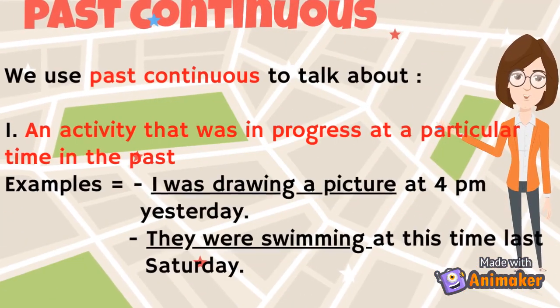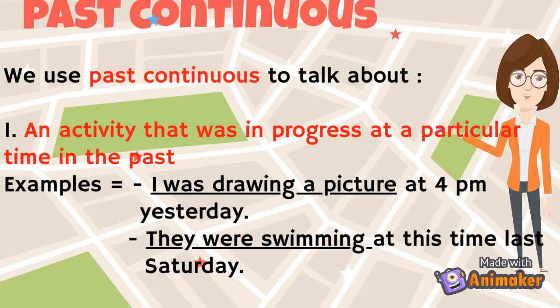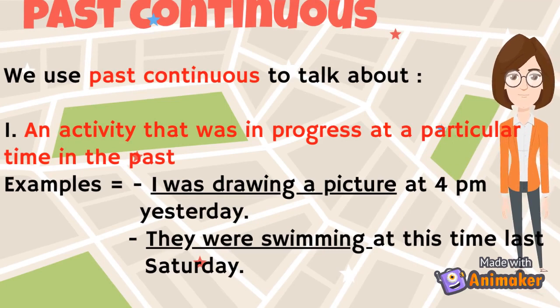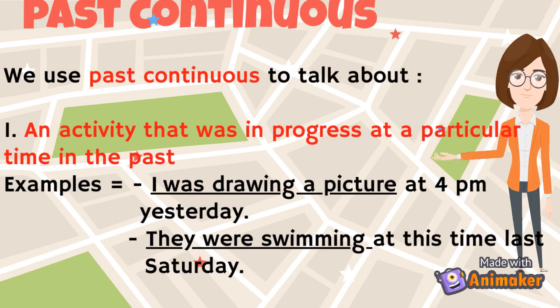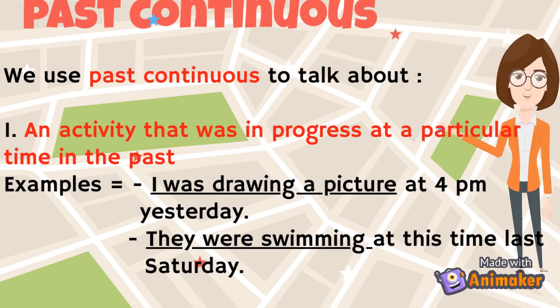We use past continuous tense to talk about an activity that was in progress at a particular time in the past. For example: I was drawing a picture at 4pm yesterday. They were singing at this time last Saturday.